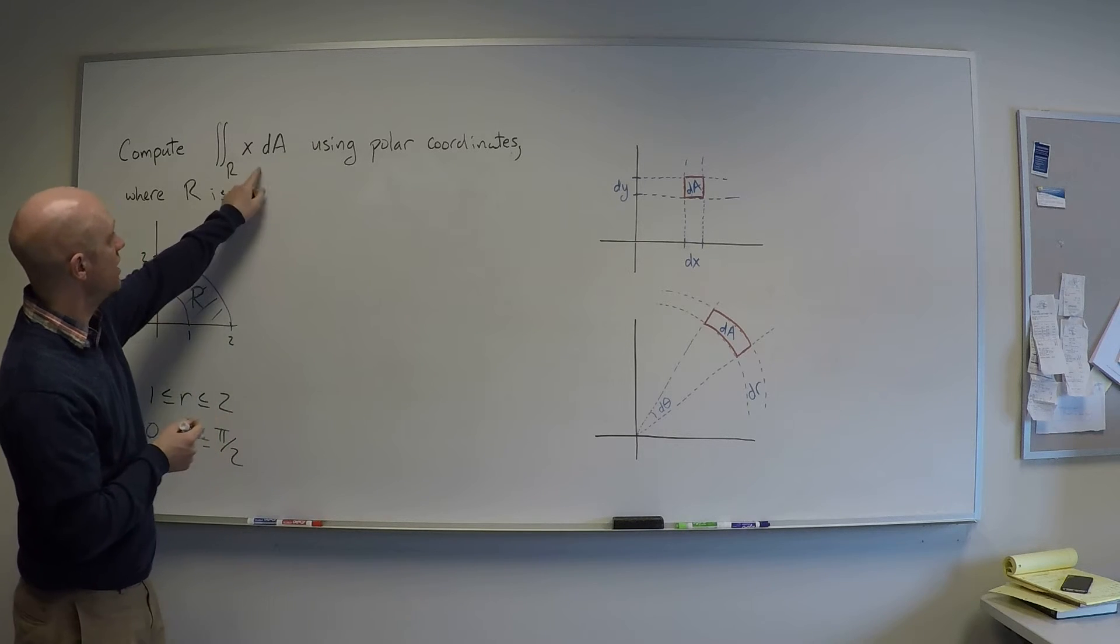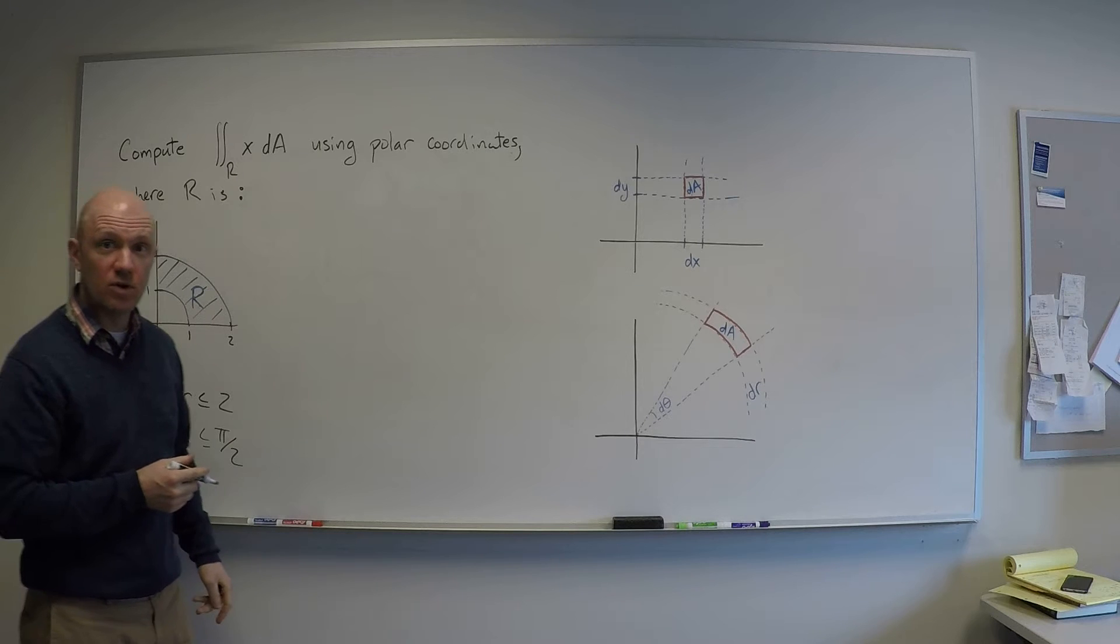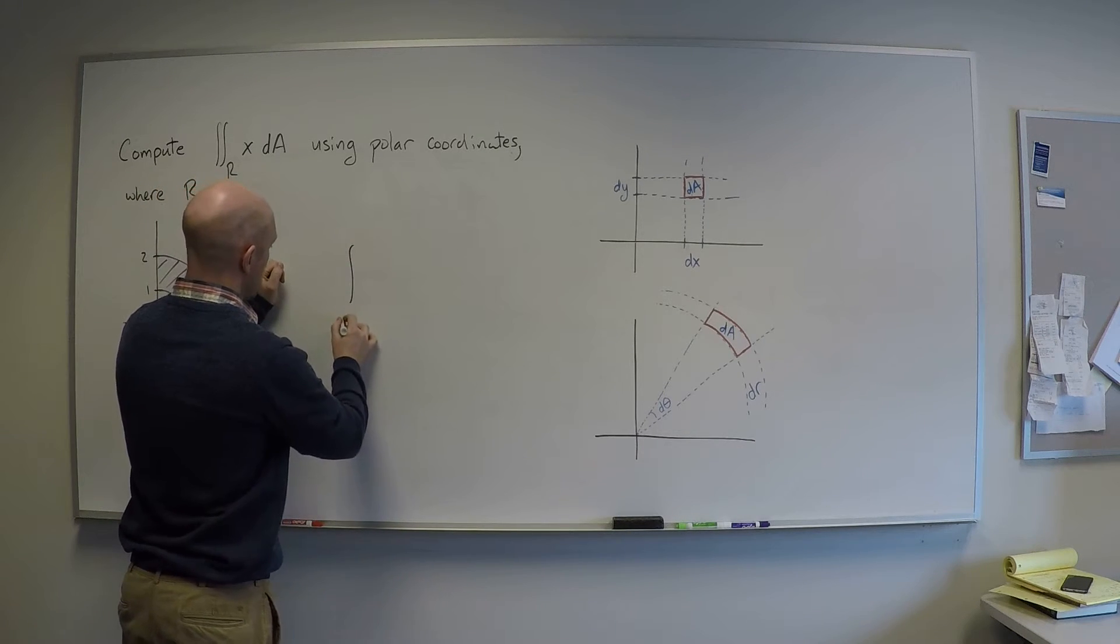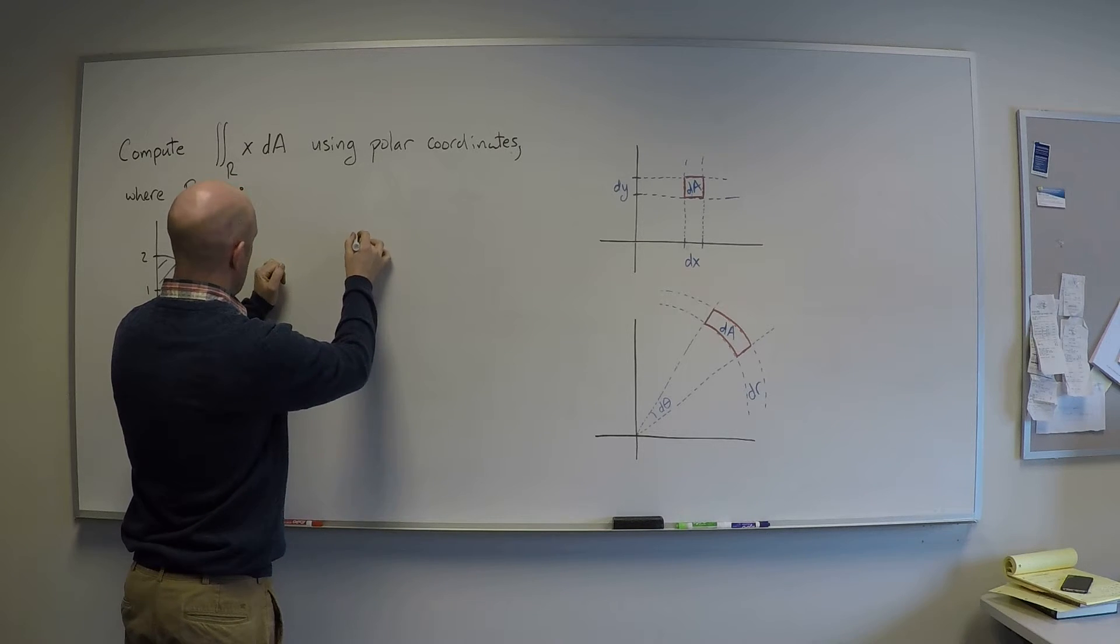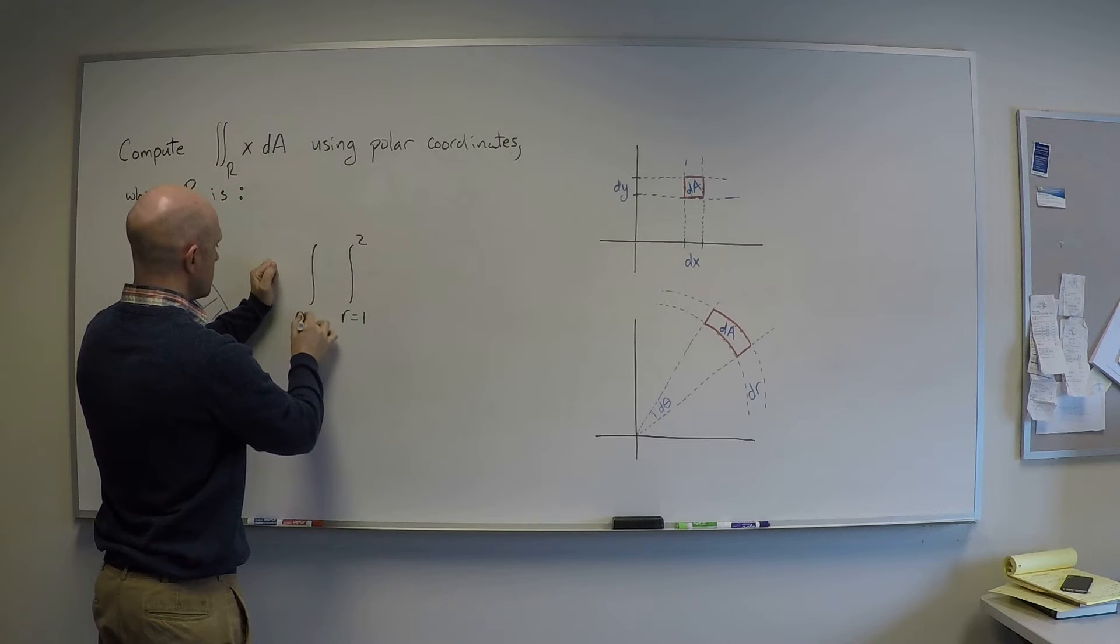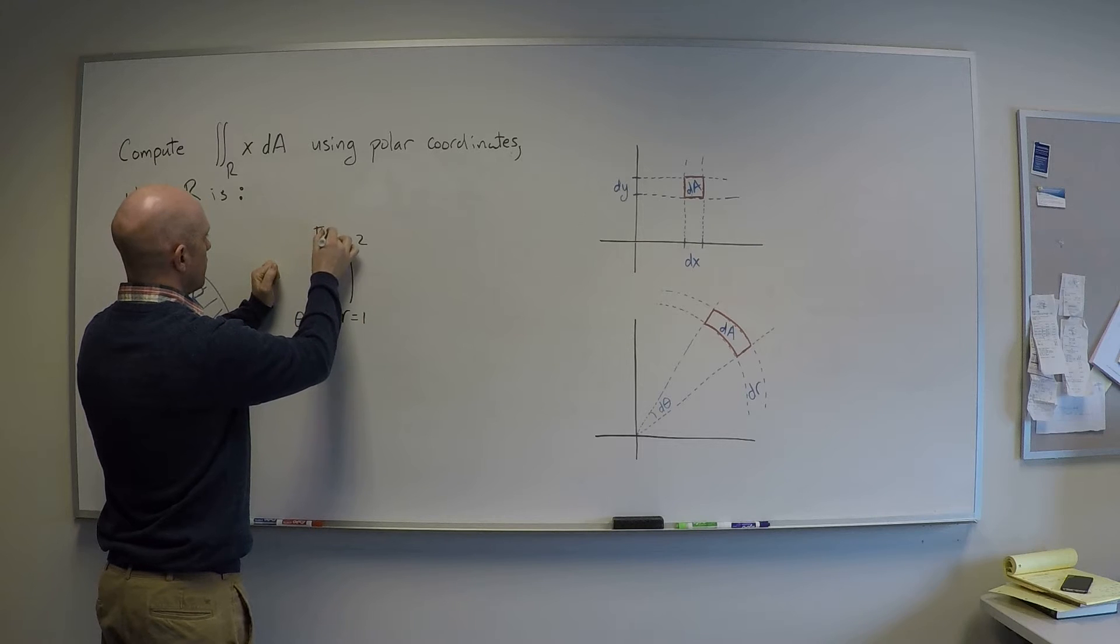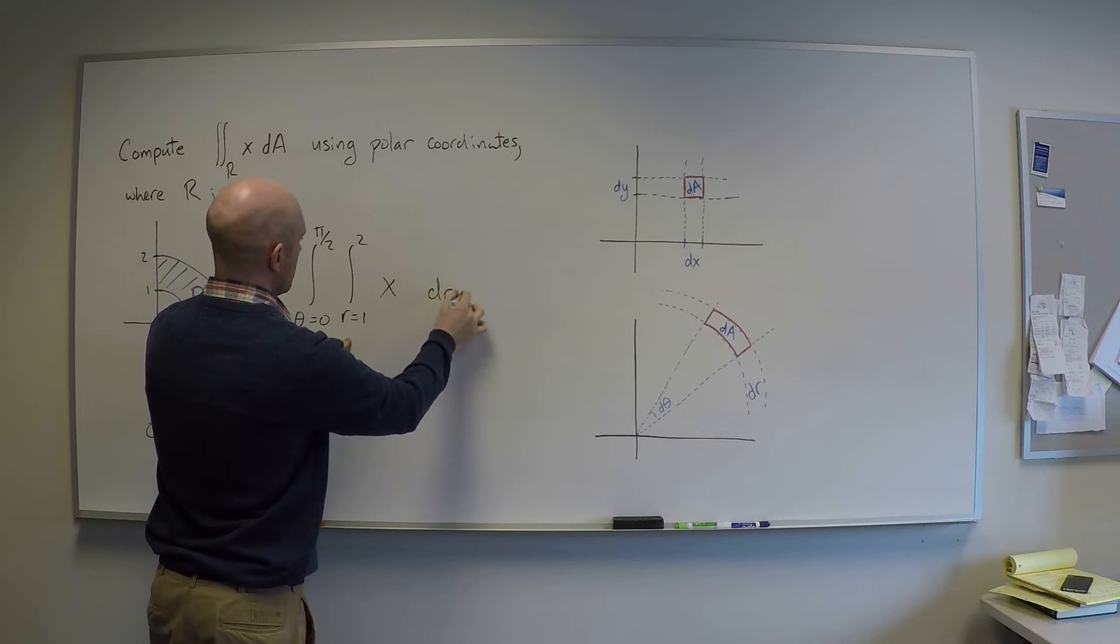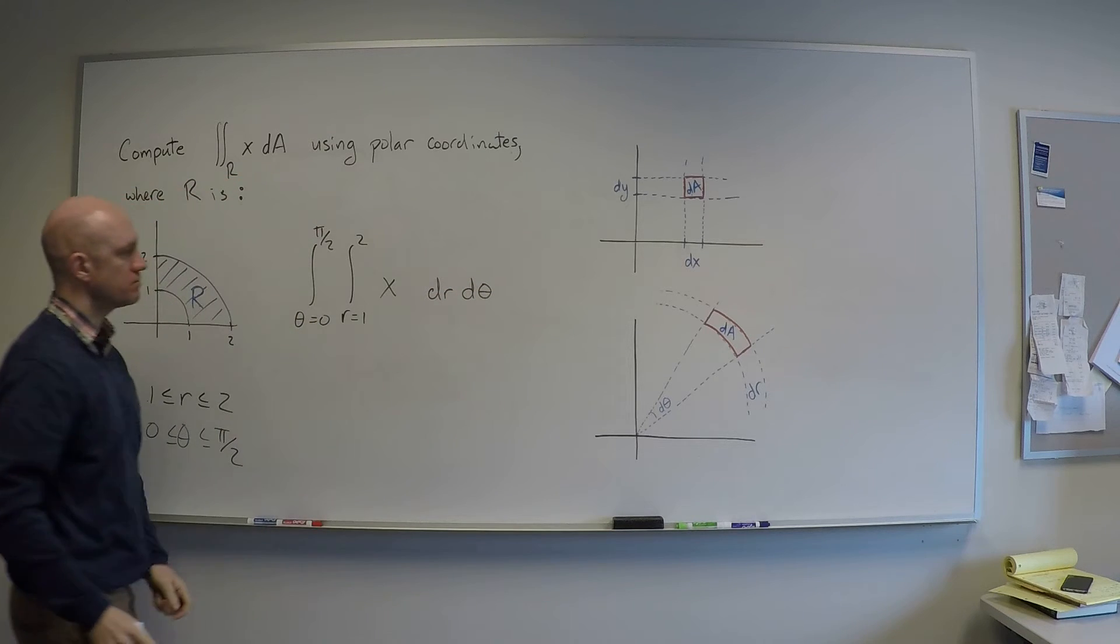Now if we just charge ahead and try to set up this integral in polar coordinates, I just want to integrate over this box. So I would say let's say that r starts at 1 and ends at 2. Let's say that theta starts at 0 and ends at pi over 2. And I want to integrate x and I want to go dr d theta. Great.